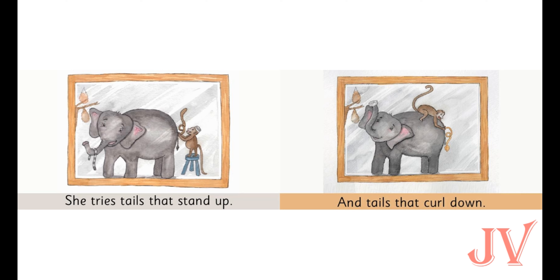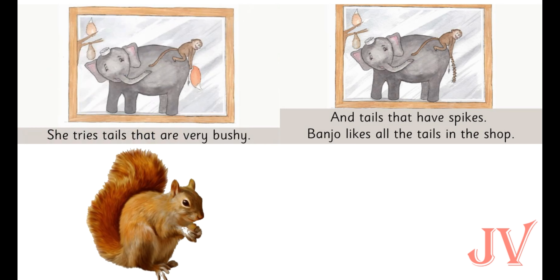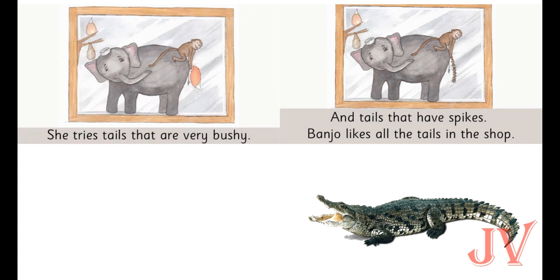Now we can see Banjo tries tails that stand up and tails that curl down. You can see in the picture the tail standing up and the tail curling down. Banjo also tries tails that are bushy. Bushy tail means thick tail, like the tail of a squirrel. She also tries tails that have spikes. A spike tail is like a pointed tail, like the tail of a crocodile.